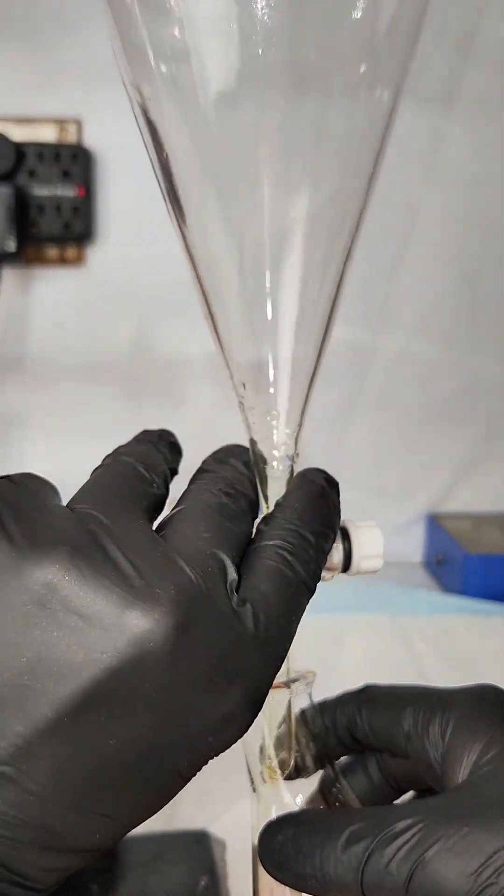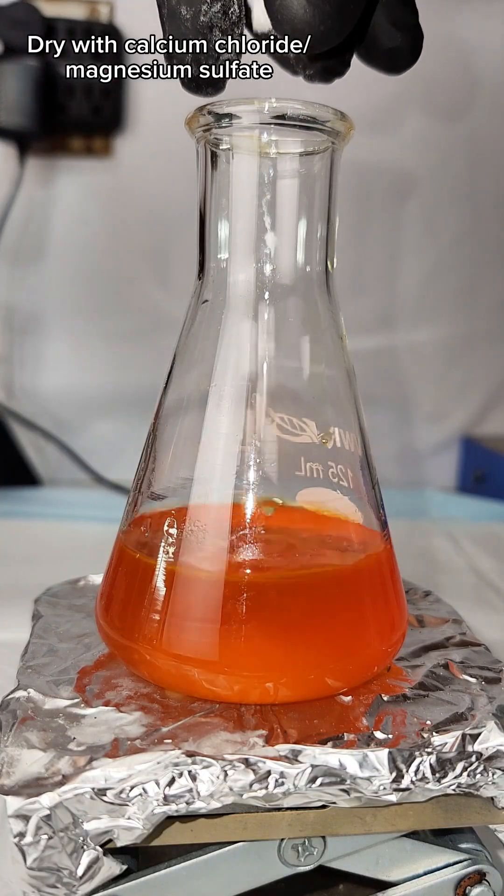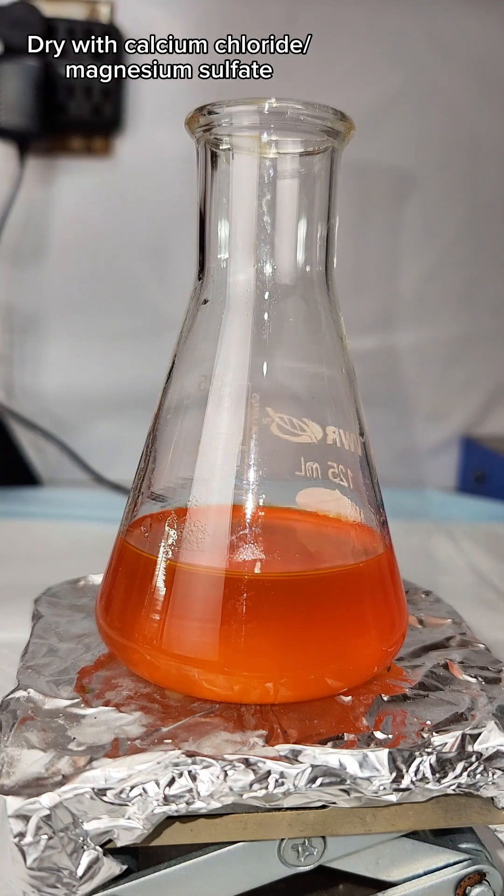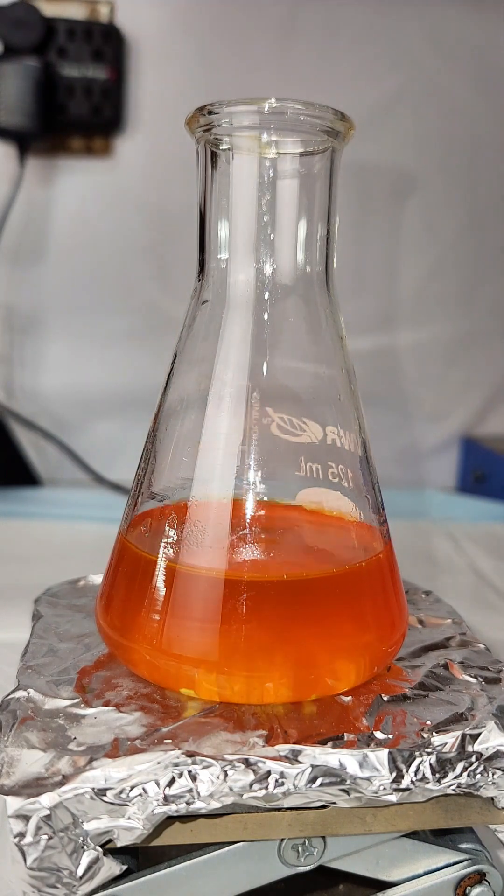The amount I added was pretty arbitrary, but after I dump it in and give the flask a little swirl, you can see the benzene immediately clear up as the excess water is absorbed.